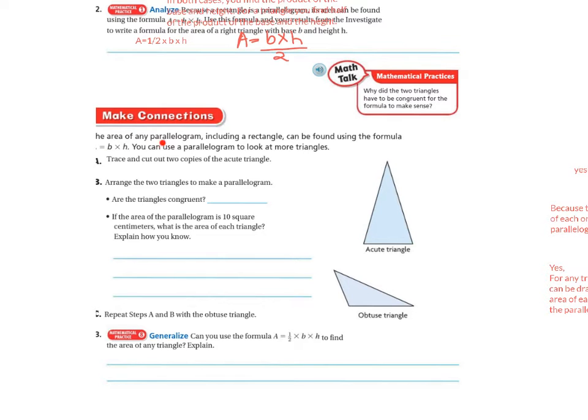Let's make a connection. The area of a parallelogram, including a rectangle, can be found using the formula. And that should be an A there. Sorry about that, guys. Let me put that there. Kind of got cut off. Area equals base times height.